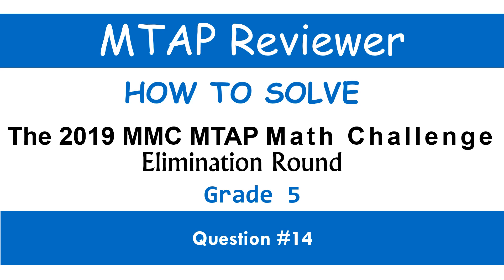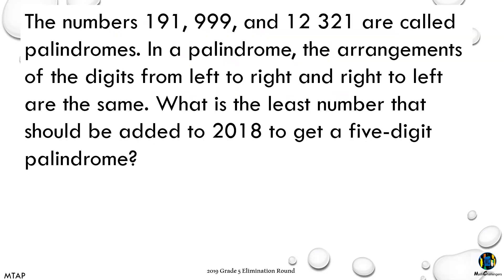Question number 14. The numbers 191, 999, and 12,321 are called palindromes. In a palindrome, the arrangement of the digits from left to right and right to left are the same. What is the least number that should be added to 2018 to get a five-digit palindrome?